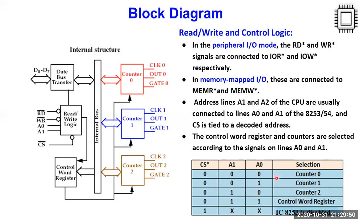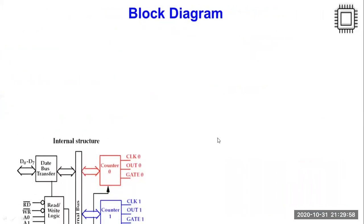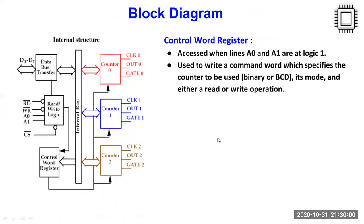This table would be very important when we would be programming the IC. The next important block on the system is what is this control word register. This control word register helps us to understand which specific counter mode is being enabled, are we using a binary count value or a BCD count value, what kind of operating mode is this IC undergoing, and what kind of read and write operations are being taken by this IC.